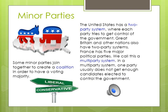The United States is primarily a two-party system where each party tries to get control of government. Great Britain and other nations also have a two-party system, but many countries like France have a multi-party system. In a multi-party system, usually one party does not get control of the government, so there are many varying ideas and platforms. Some minor parties join together to create a coalition when they feel they don't have enough power alone to promote their ideas.